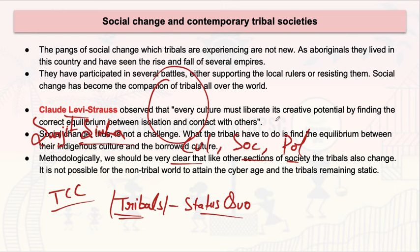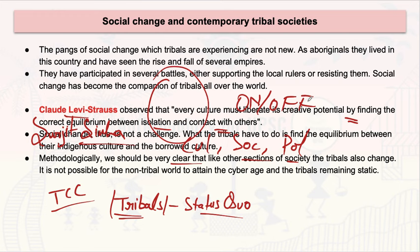Different anthropologists gave different viewpoints on social change. For example, CL Strauss believed that every culture must liberate its creative potential by finding the correct equilibrium between isolation and contact with others. This means tribal society should take something from mainstream society, but at the same time it should not dilute all its own practices. Various factors influence how much a particular tribal society is impacted by the mainstream, bringing social changes into it.